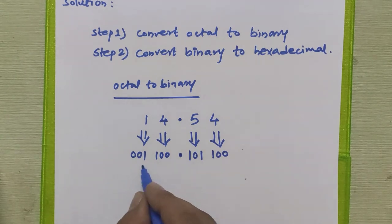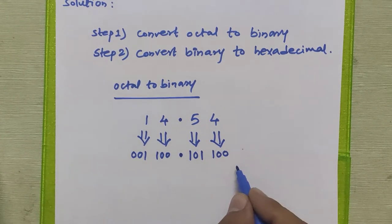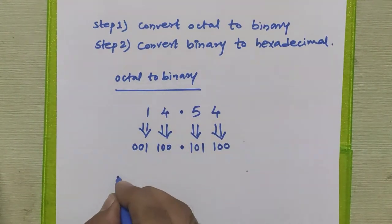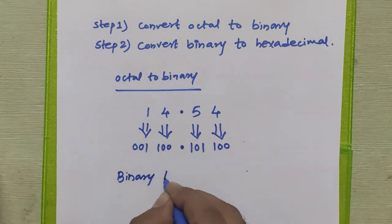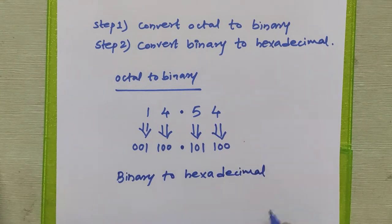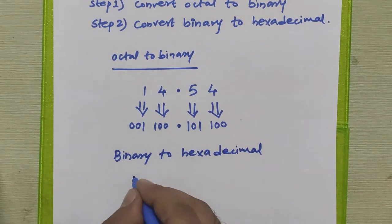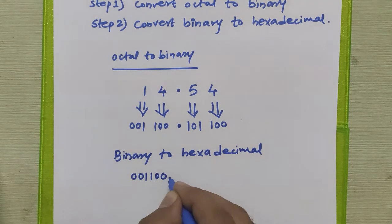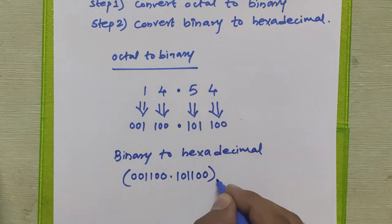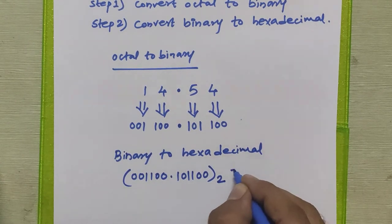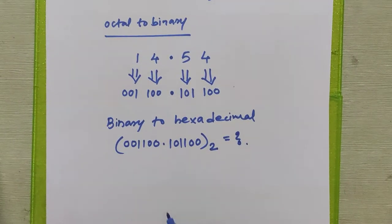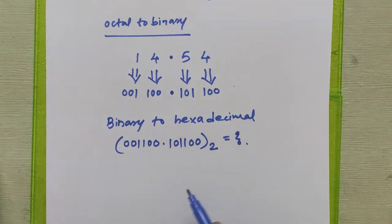Now in step 2 we will convert this binary number from binary to hexadecimal. The binary number that we obtained was 001100.101100. We are going to convert it into hexadecimal, and we know how to convert any binary number to hexadecimal number system.